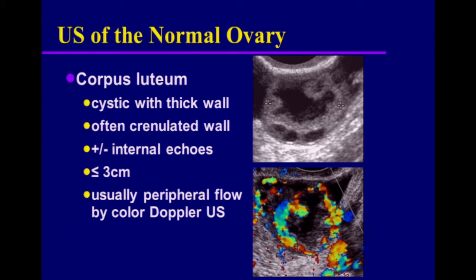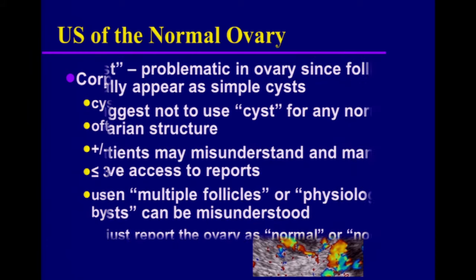The corpus luteum is another normal structure that we see after ovulation. The typical appearance is a cystic lesion with a thick, crenulated wall and some internal echoes. If you put on color or power Doppler, it often shows a vascular rim, which is quite typical. These are usually less than two to three centimeters in maximum diameter. This is just a typical appearance of a corpus luteum that we expect to see after ovulation, and we don't want to report these as abnormal or masses that need follow-up. Occasionally you may not be sure about one, but most cases have a characteristic enough appearance that you can be confident.